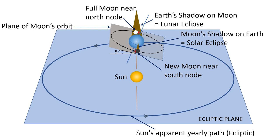Here, during the New Moon and Full Moon positions, the Moon is in the ecliptic plane and so it is aligned with the Sun and the Earth in the ecliptic plane — that is, the Moon, Earth, and Sun are all in the same plane in a straight line. And hence eclipses will happen in these situations.